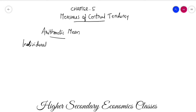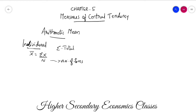For individual series, the arithmetic mean is x-bar. The formula is x-bar equals sigma x divided by n. Here, sigma means total — total of all x values — divided by n, which is the number of items in the individual series.